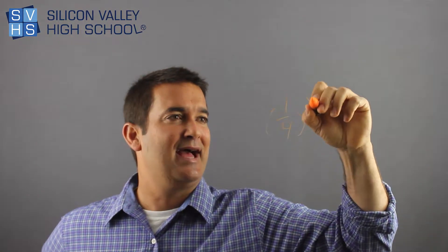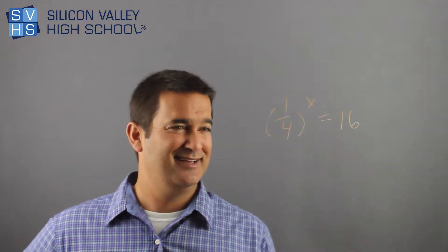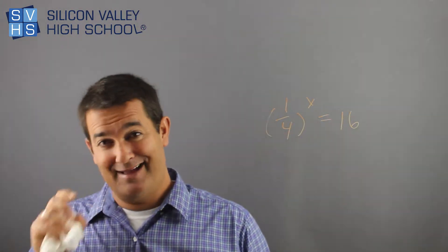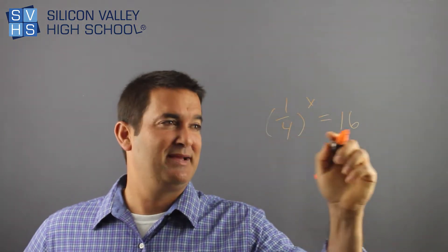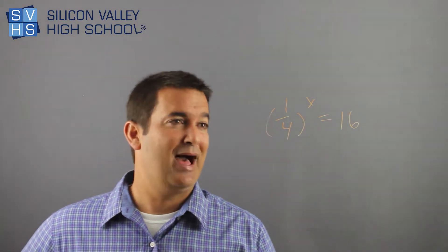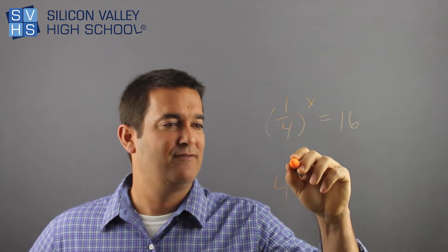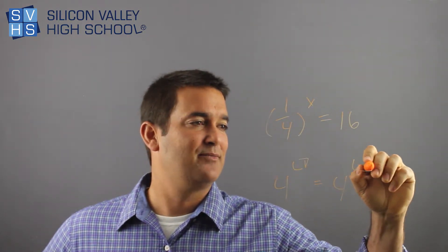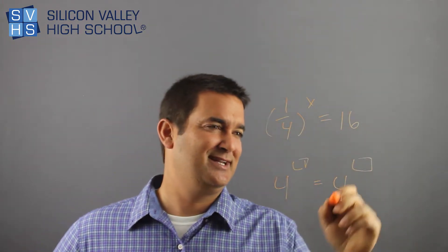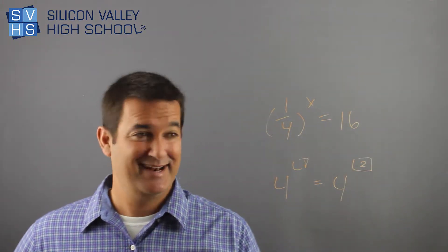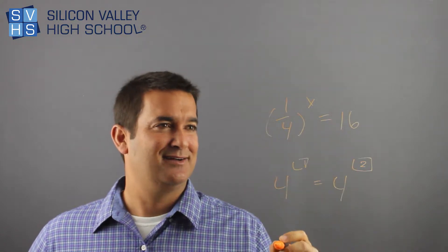(1/4)^x = 16. Now you're like, this is just messed up. What you should do here, these bases do not match at all. I would make them both 4 to the something equals 4 to the something. The right side looks pretty easy. 16 is definitely 4^2, so that one's kind of done. What is this sucker?